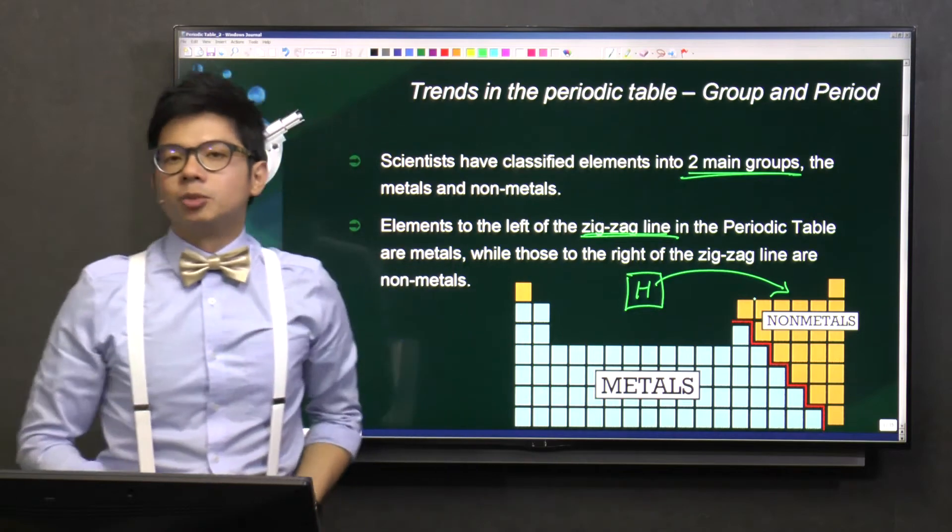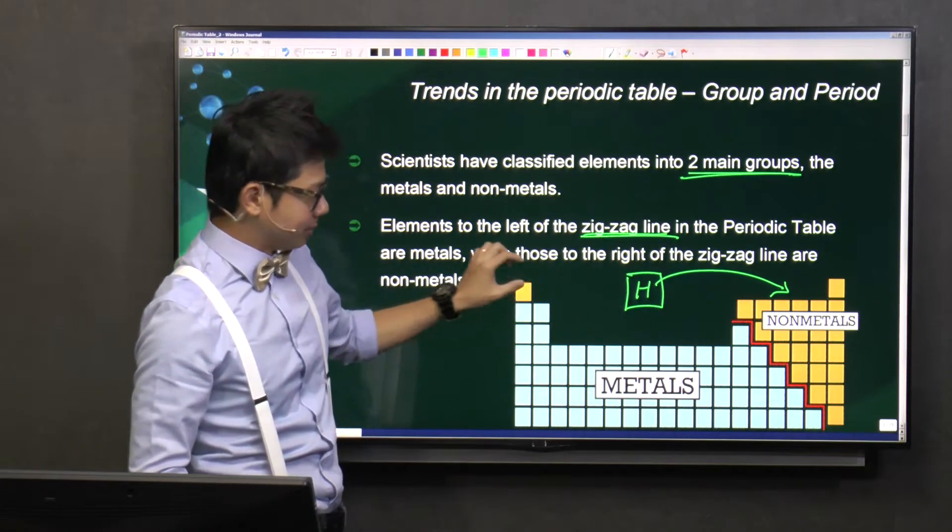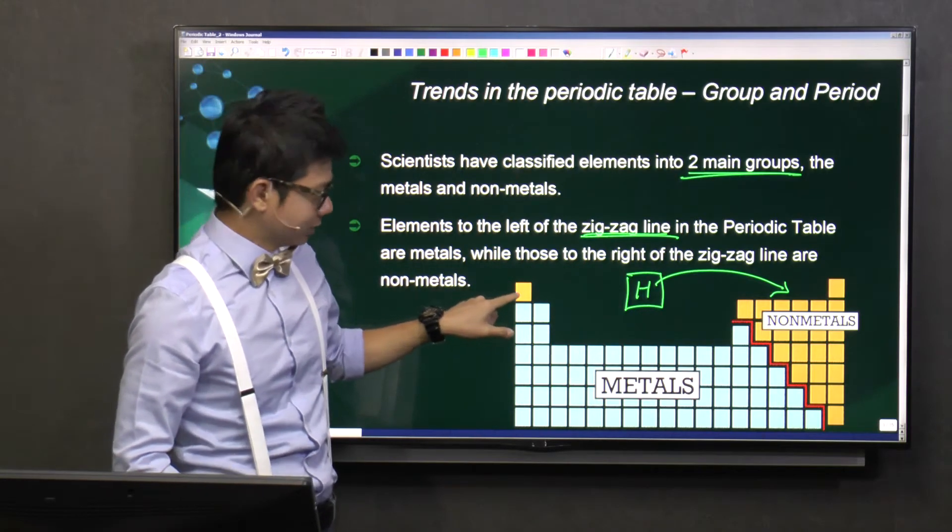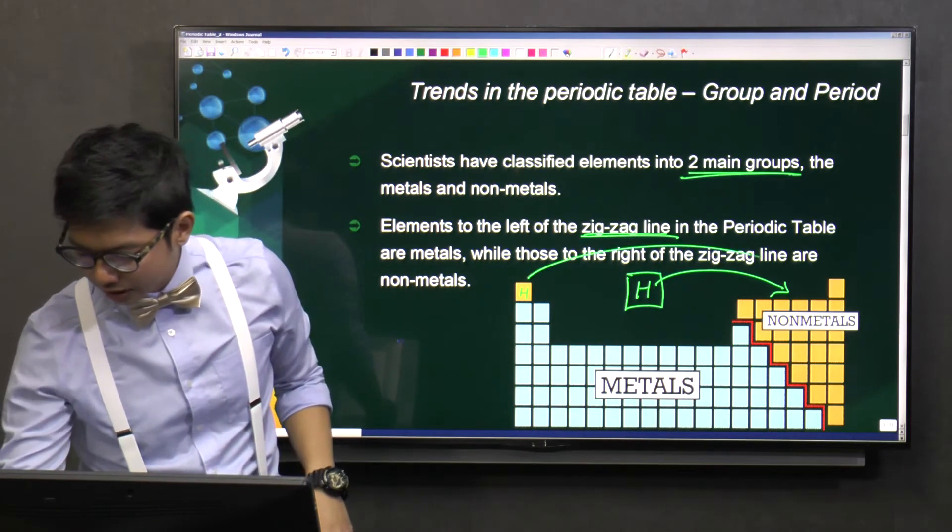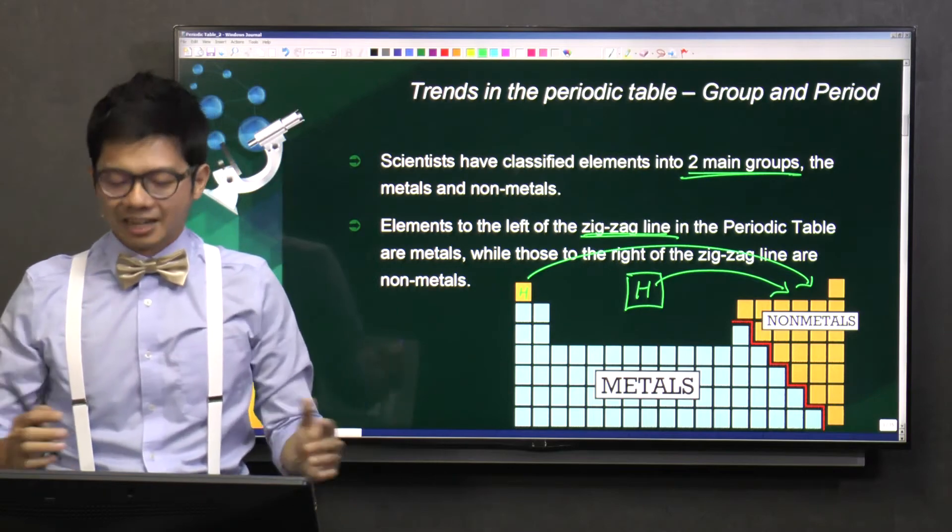And in some periodic tables, the hydrogen element will not be placed in the middle. It will be placed right at the left top corner, just like this. So this element here is actually hydrogen. And of course, it's also non-metal. Clear about this? Then we can move on.